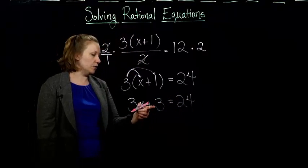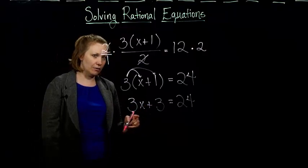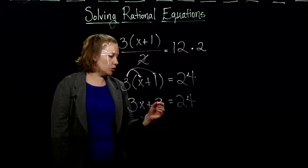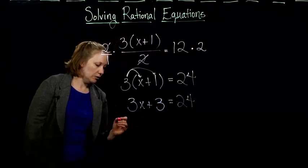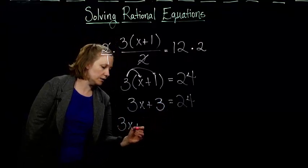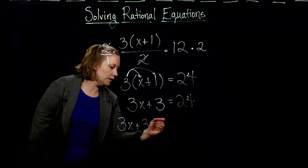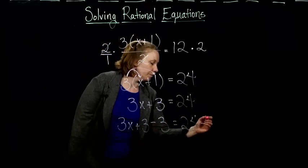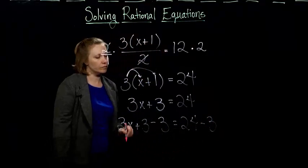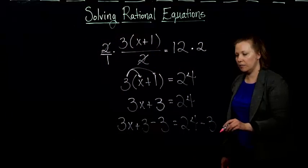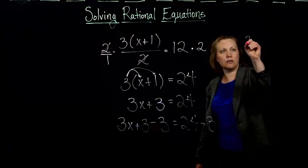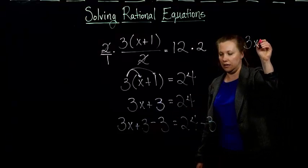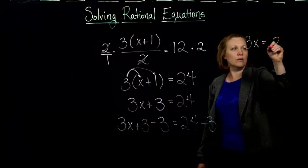Then we would have to, we're trying to get the x's by themselves. So we have to subtract this 3 here. So 3x plus 3, now we're going to minus 3 from both sides. And we're almost there. So we end up with just 3x equals 21.